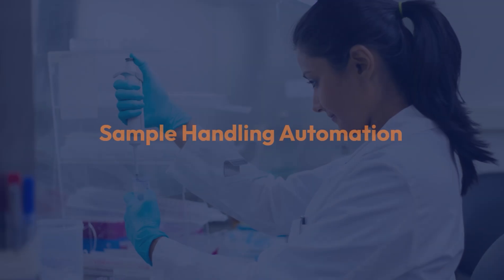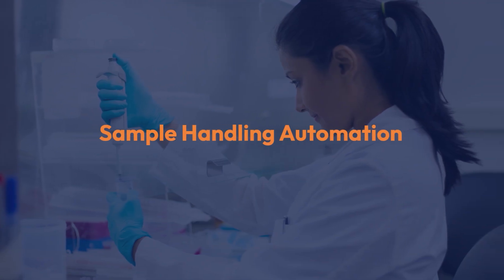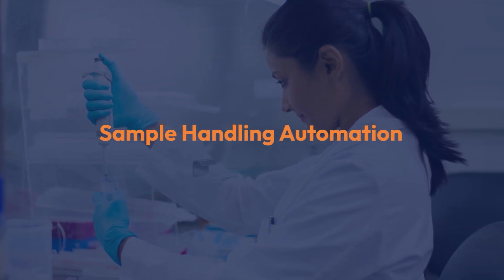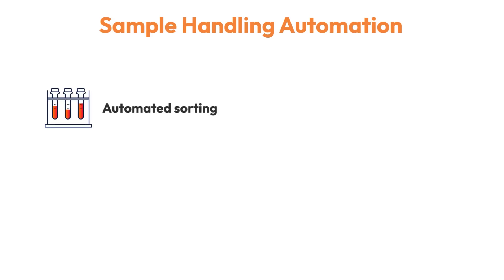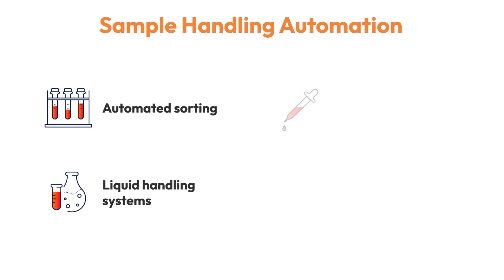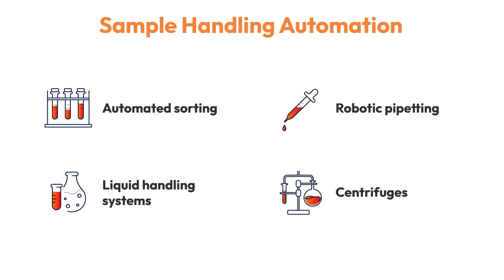Sample handling automation is all about optimizing efficiency when samples arrive in the lab. It encompasses everything from automated sorting and barcoding to liquid handling systems like robotic pipetting and centrifuges. These systems streamline the preparation and distribution of samples, speeding up the testing process while maintaining high accuracy.